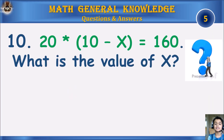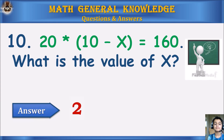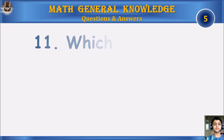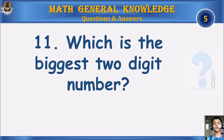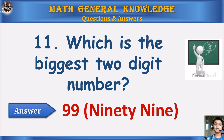20 times 10 minus x equals 160 — what is the value of x? Your time starts. Answer: 2. Which is the biggest two digit number? Your time starts. Answer: 99.